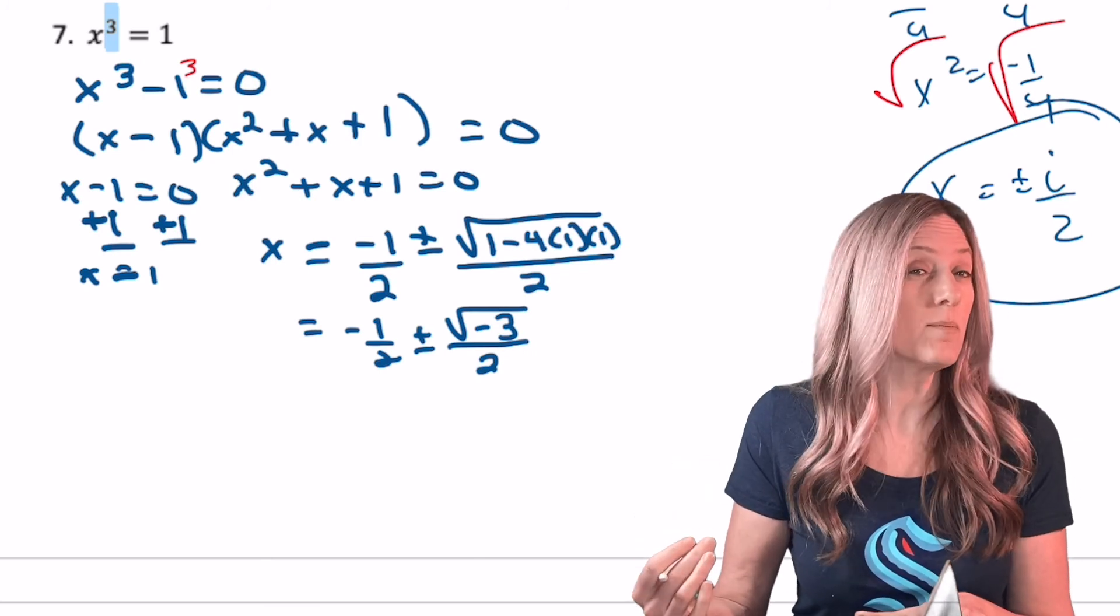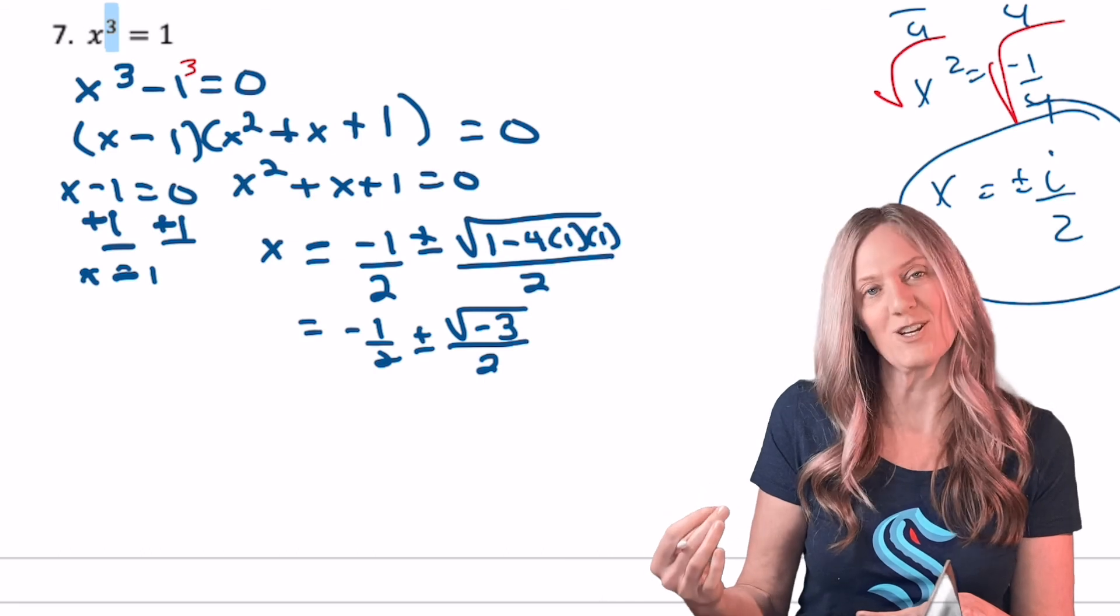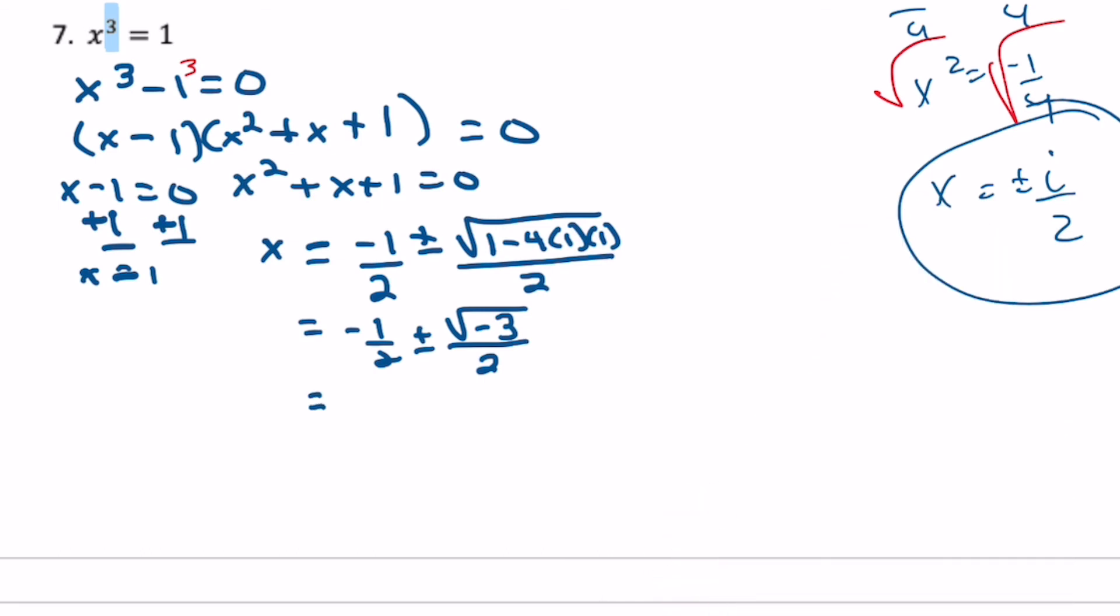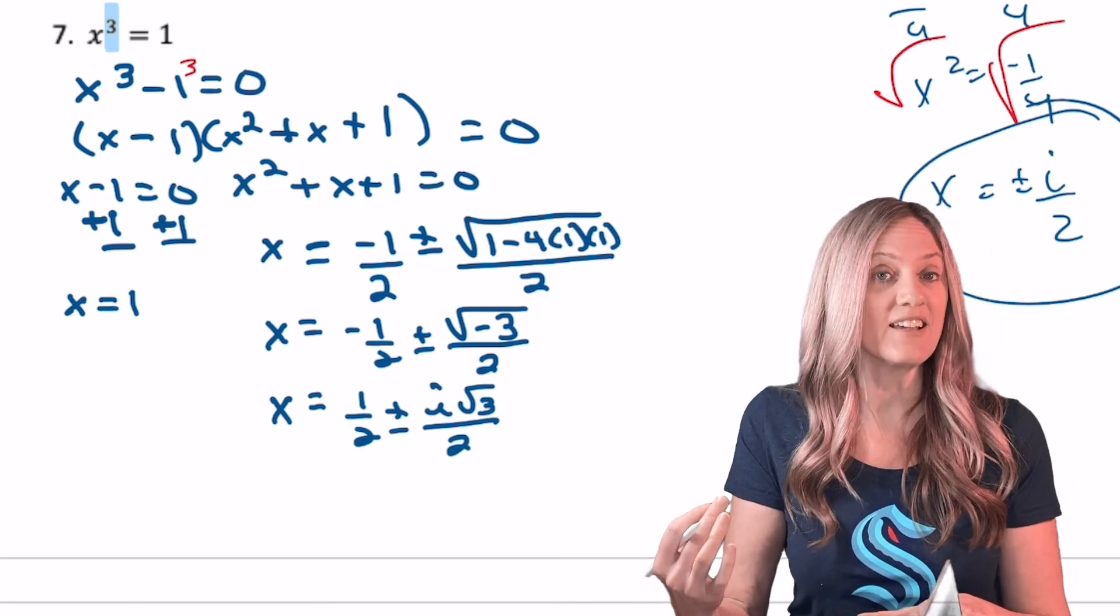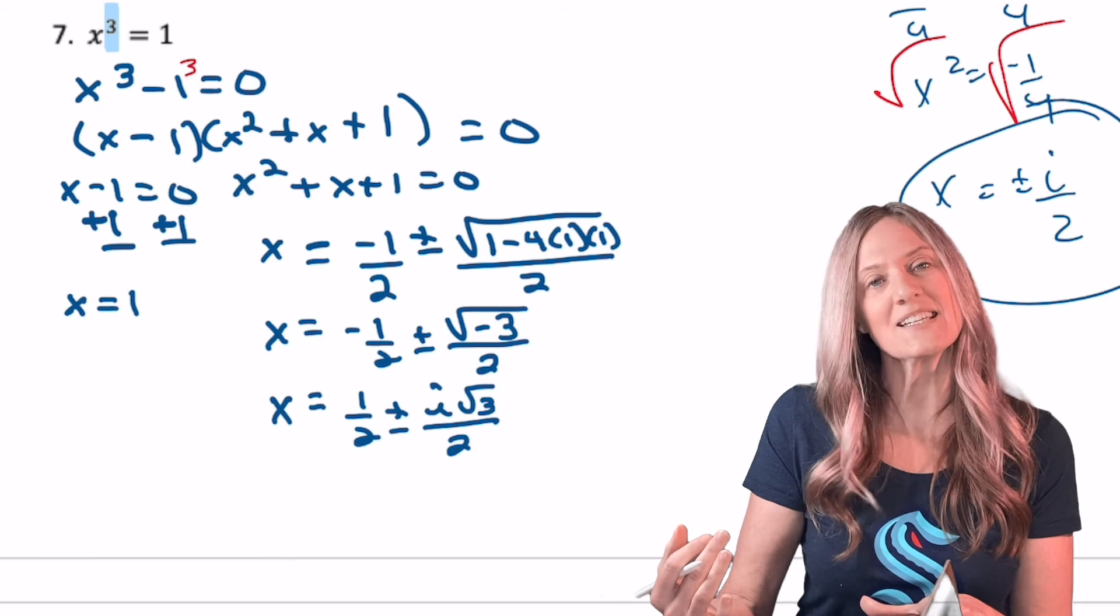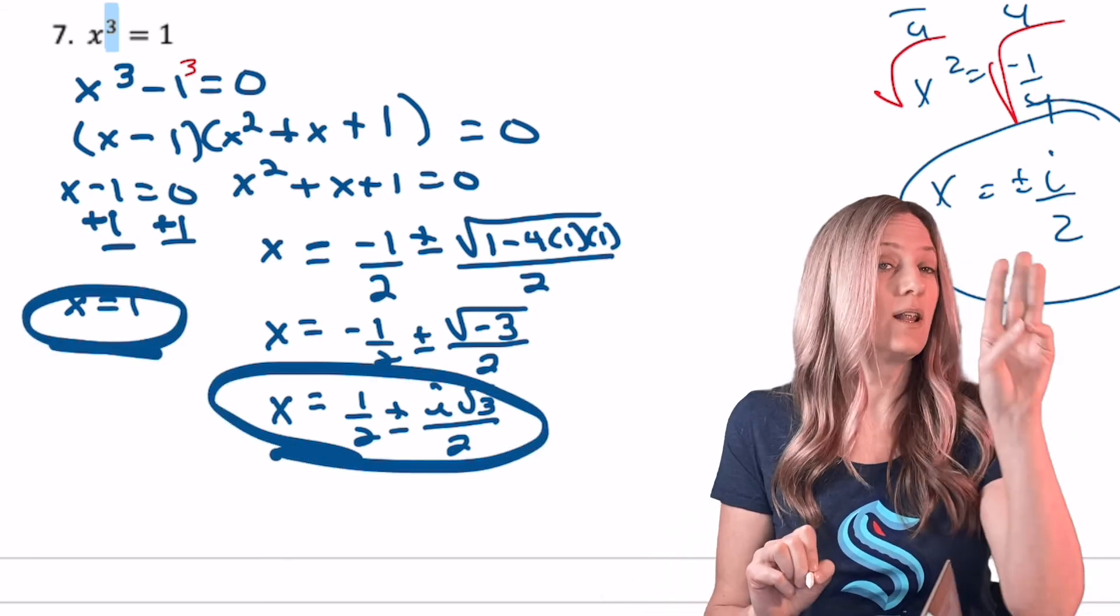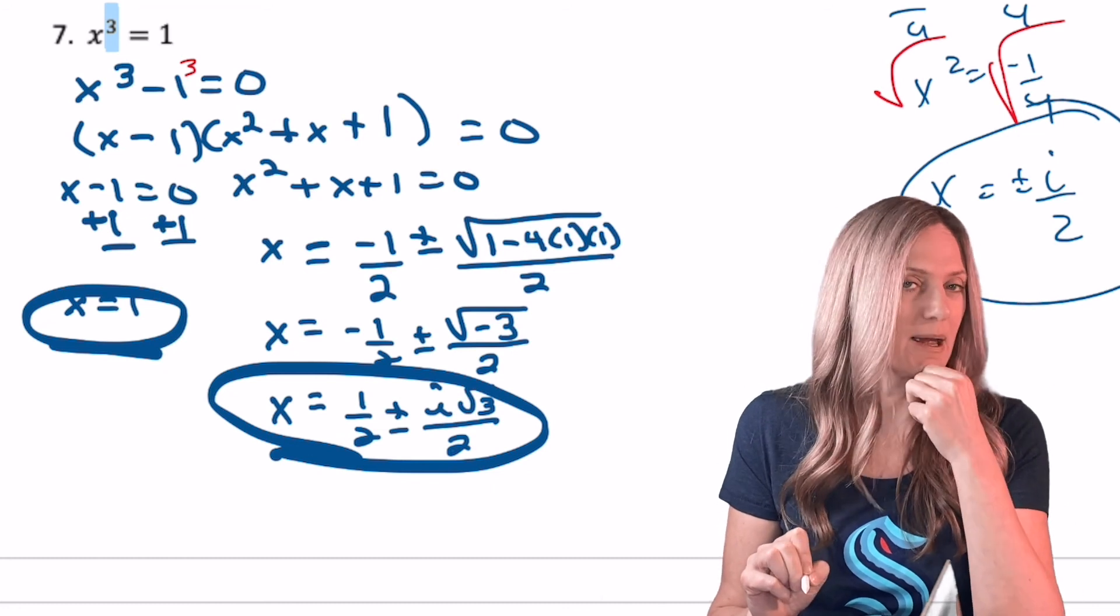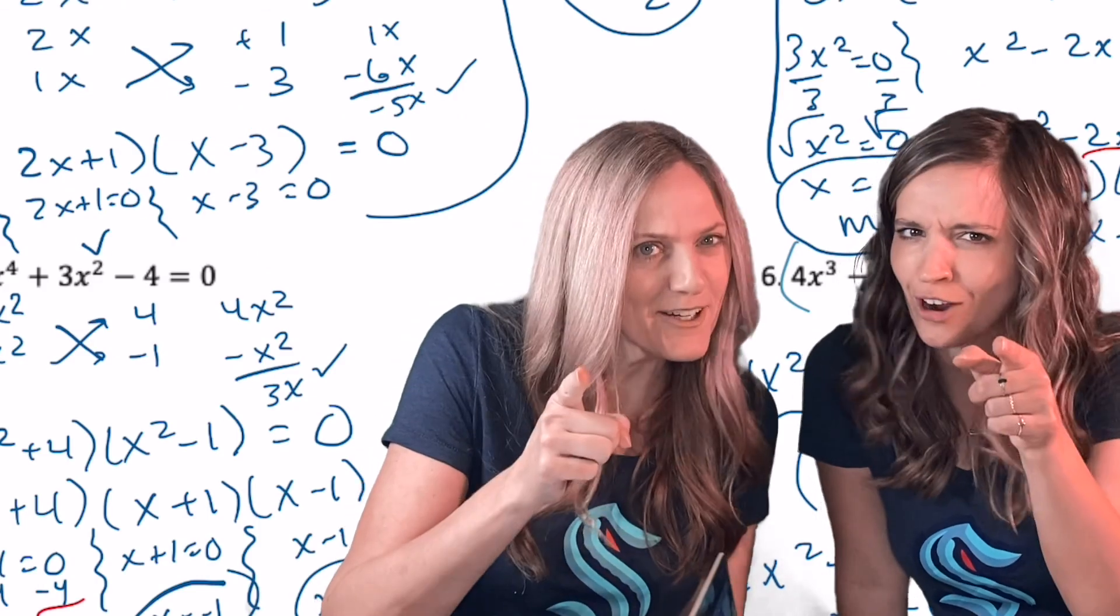Notice that the discriminant under the square root sign is negative. Therefore, I will have imaginary solutions. All right, be sure and clean up the square root of negative three to I square root three. And then we can clearly see we have two imaginary solutions and that one real solution. For a total of three solutions for my cubic. Solving for all solutions. Get cracking.